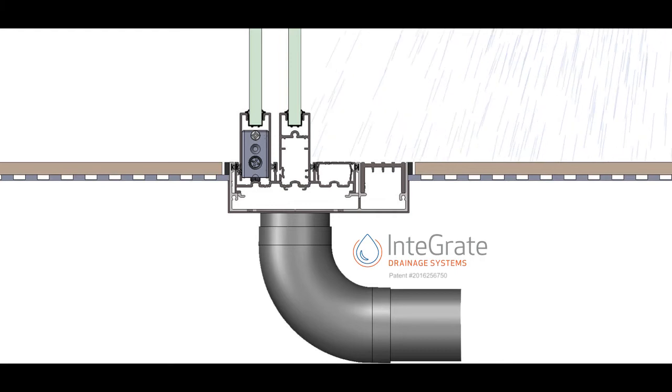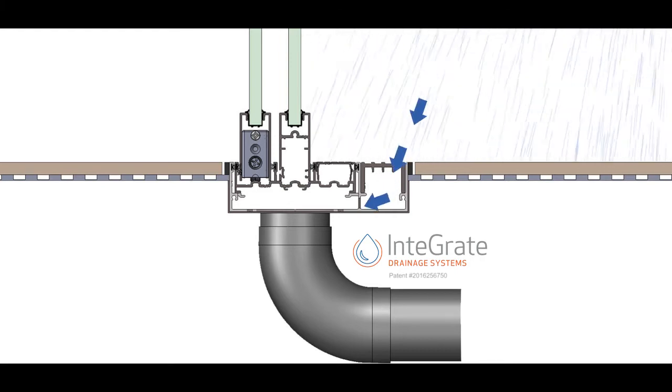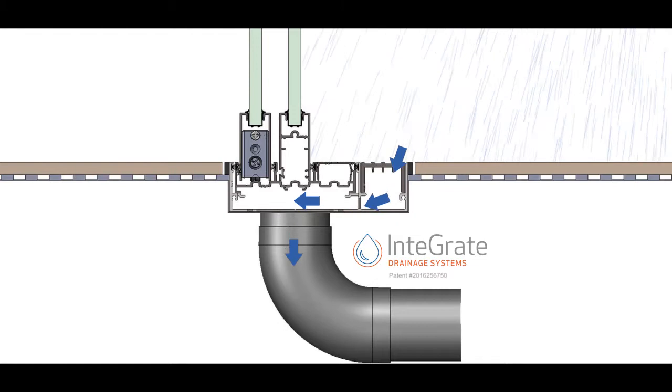When heavy rainfall strikes, the water flows through the drain grate into the sump area, where it's then drained into a pre-installed drain waste.